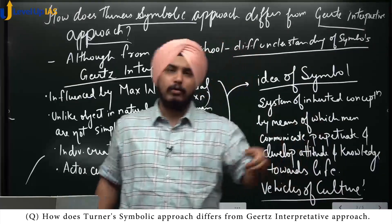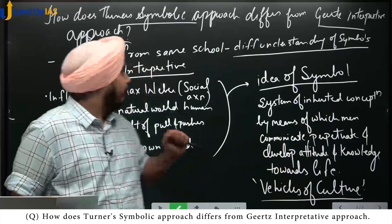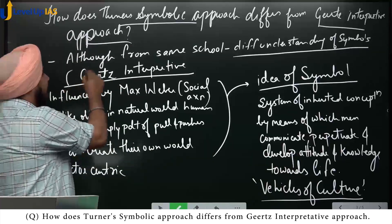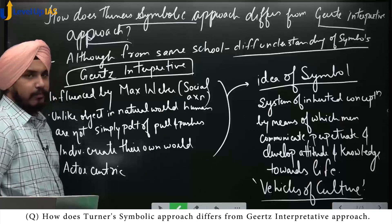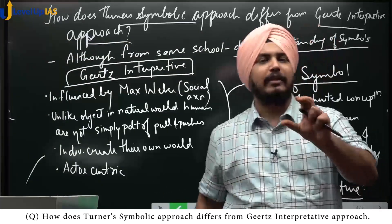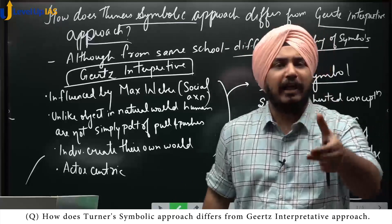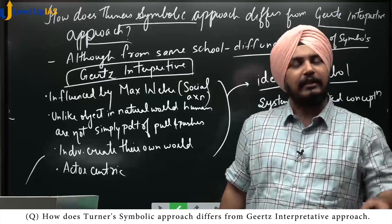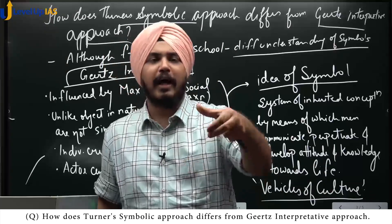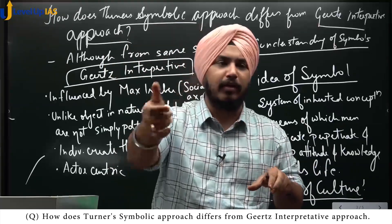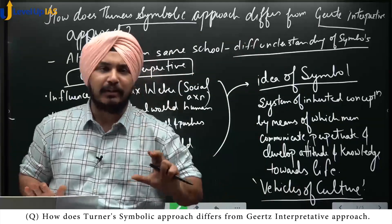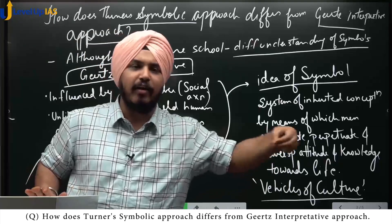You can give an introduction and then explain what Geertz's interpretative approach is. In Geertz's interpretative approach, you have to explain the influences — which influence generated his idea of symbol, and how it is different from the idea of symbol given by Turner. First, explain the influence and how it generated the idea of symbol.